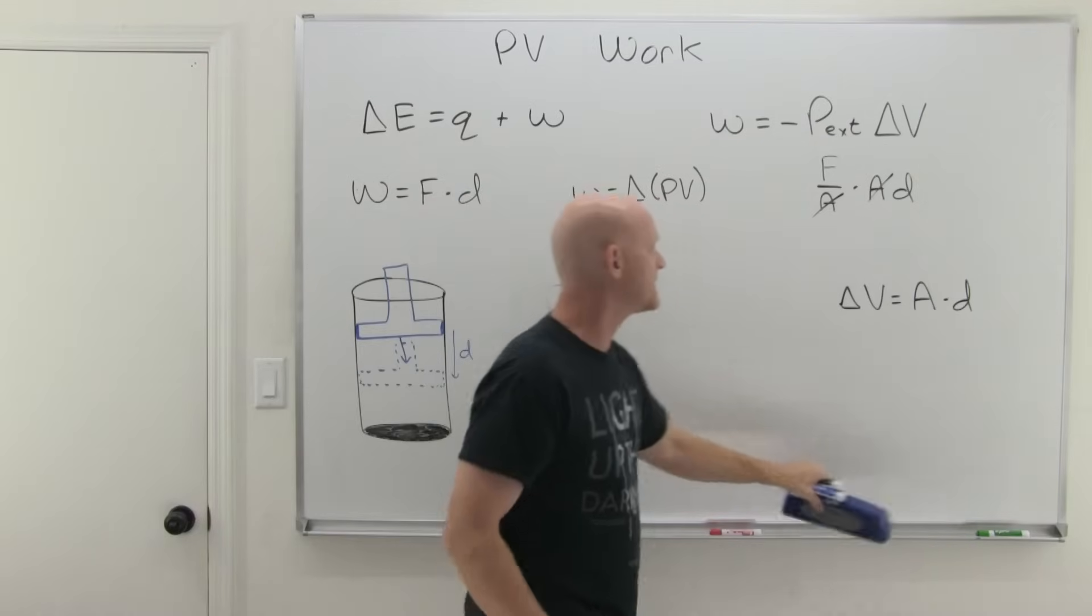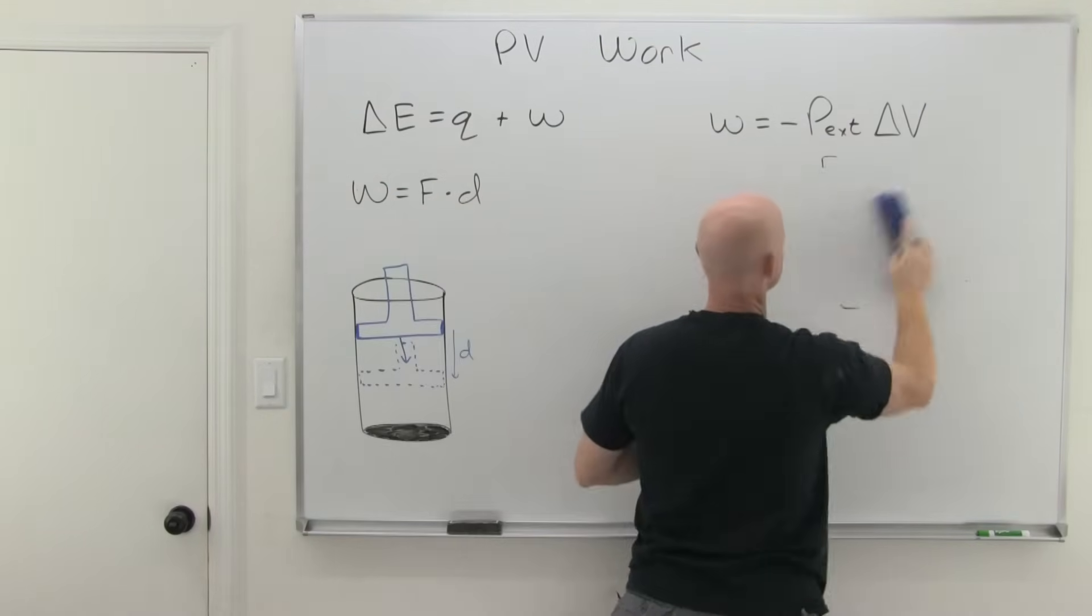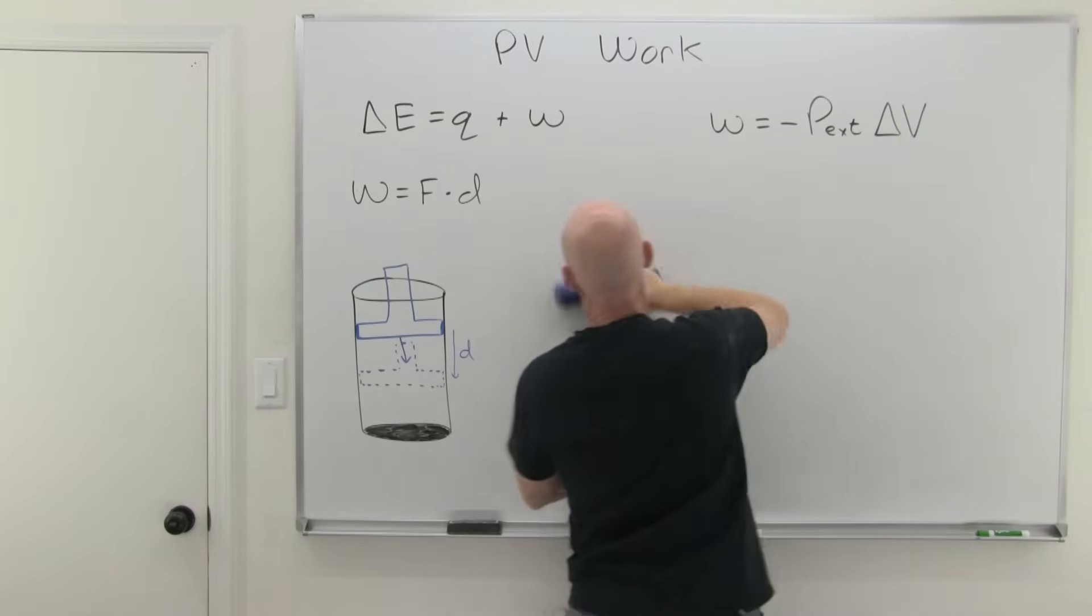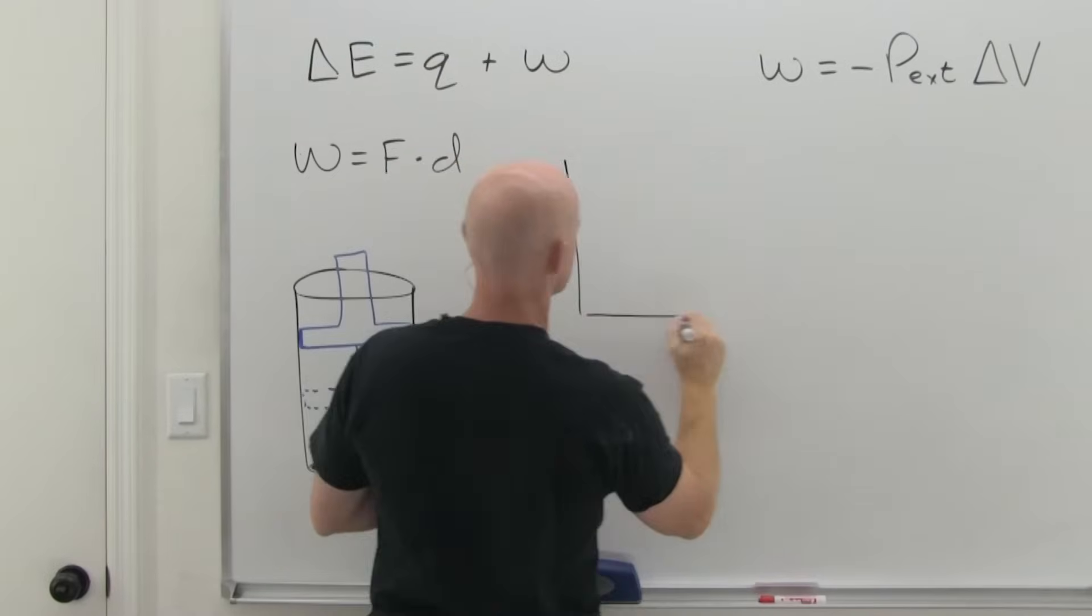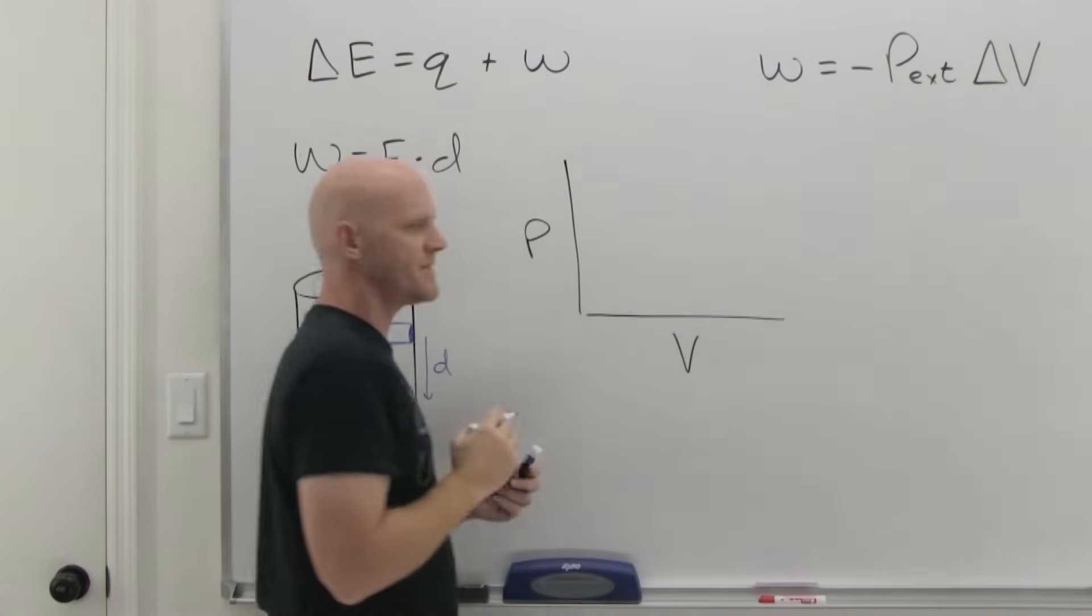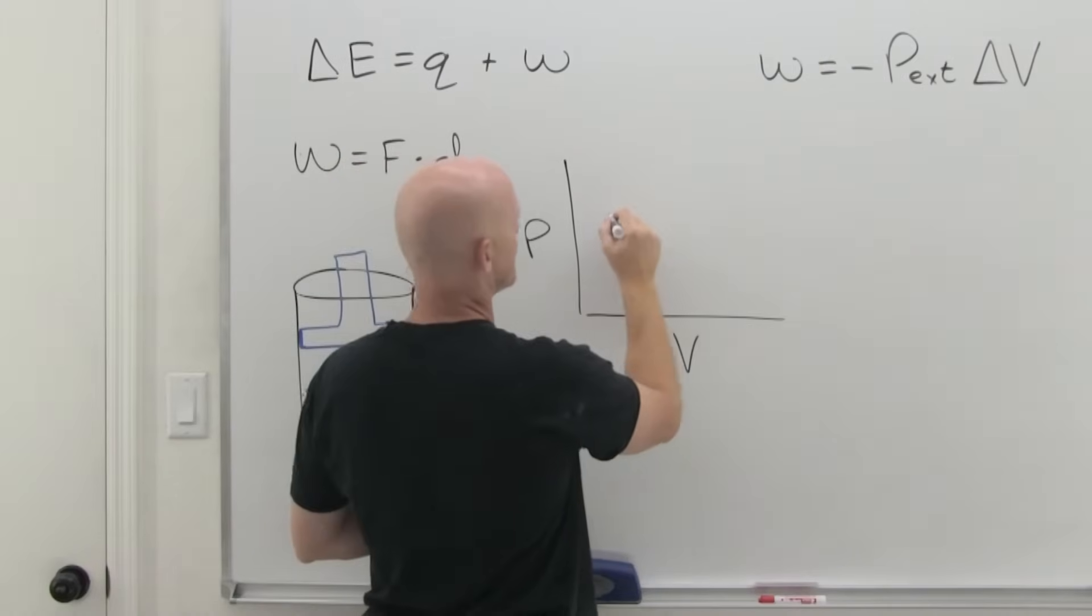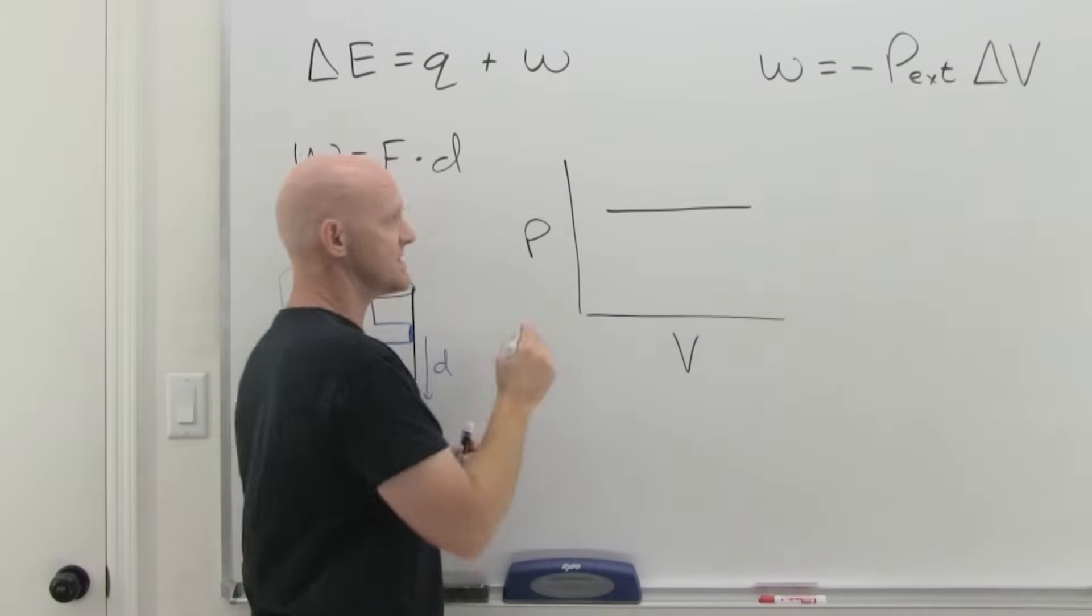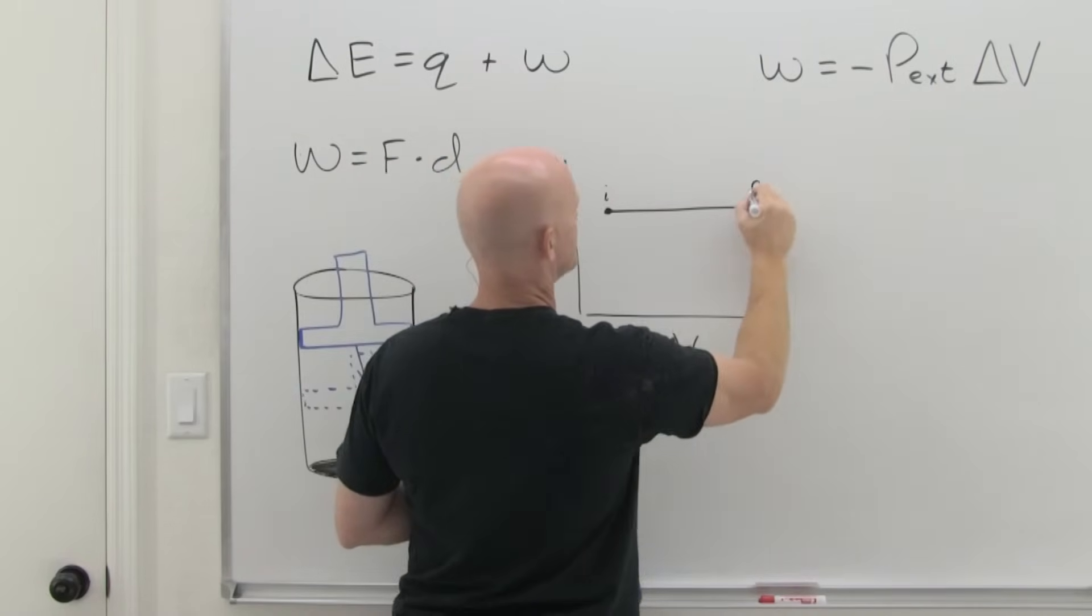So I want to get through that little derivation real quick. And now we've got some other things to worry about here. One of them is some graphical representation, where we get pressure on the y-axis, volume on the x-axis. We're only going to consider constant pressure, so we're going to have graphs that look like this. Maybe we've got some initial point here and some final point here.